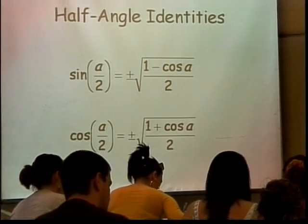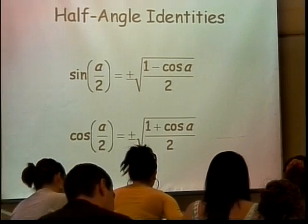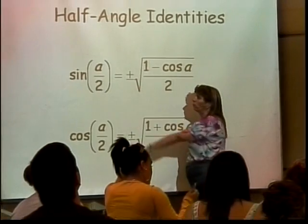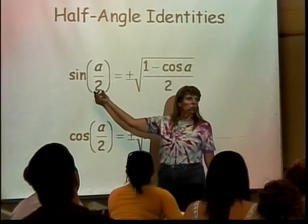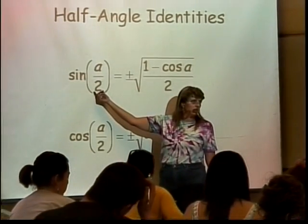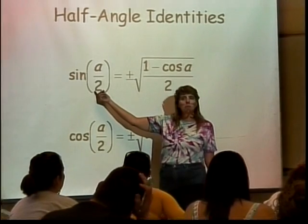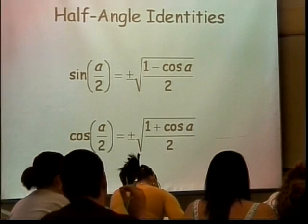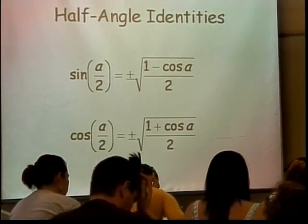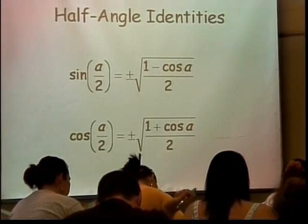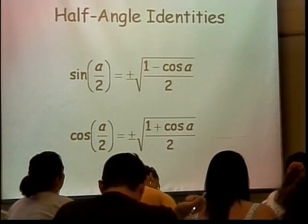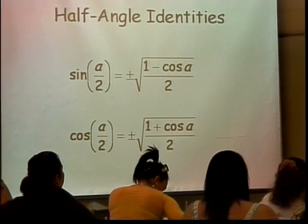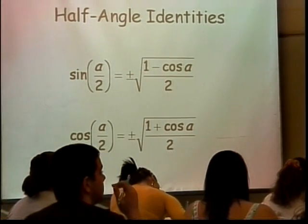How are we going to determine whether or not it's plus or minus? Well, the determination as to whether you get to use the plus one or the minus one is based on where the angle A over two is. So we're going to have to be able to determine where that is. There's going to be enough information in the problem to be able to say, ah, A over two is in quadrant two. And once we're able to do that, then we can determine that signs would need to be positive in quadrant two.